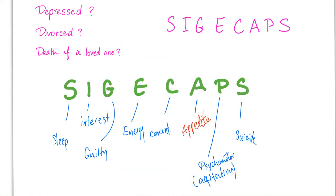If the patient looks depressed or mentions divorce or the death of a loved one, this could be depression. Use the SIG E CAPS mnemonic: S — sleep disturbance; I — loss of interest; G — guilt; E — loss of energy; C — loss of concentration; A — appetite change; P — psychomotor changes such as agitation; S — suicidal ideation. If the patient has five or more of these symptoms, depression is very likely.